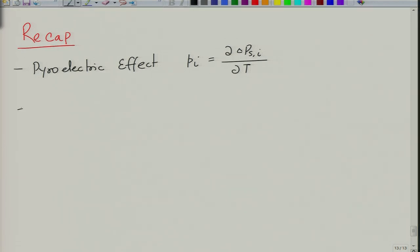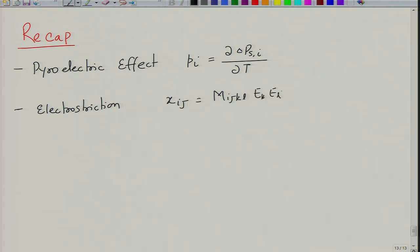We also looked at electrostriction, which is very similar to the piezoelectric effect and again correlates strain with respect to the applied field: x_ij = m_ijkl * E_k * E_l. This is the change in dimension or strain generated as a function of applied electric field. The proportionality constant is the electrostriction coefficient, a fourth-rank tensor. Importantly, this effect is present in all materials irrespective of their symmetry — even non-piezoelectric materials show this effect — unlike piezoelectric effect which only occurs in non-centrosymmetric materials.